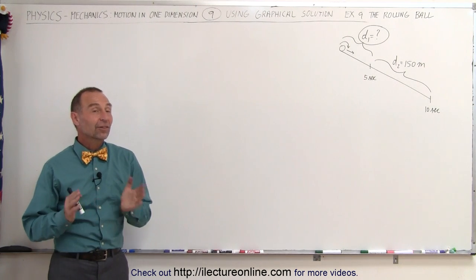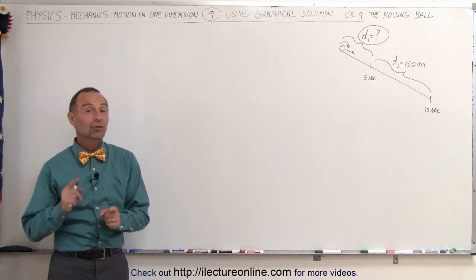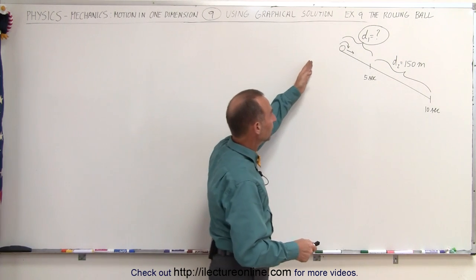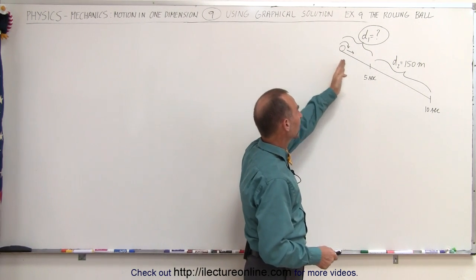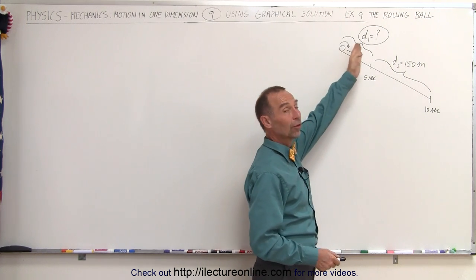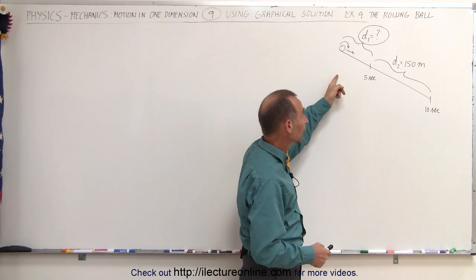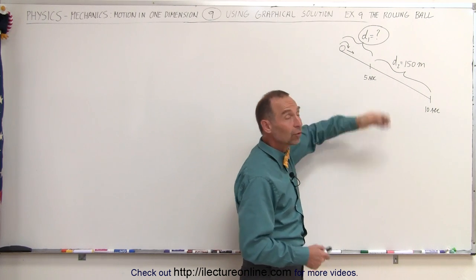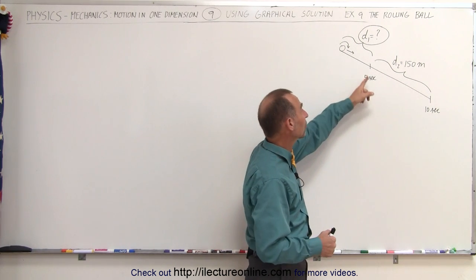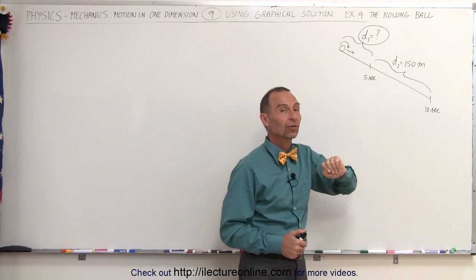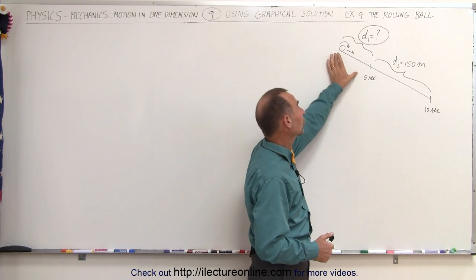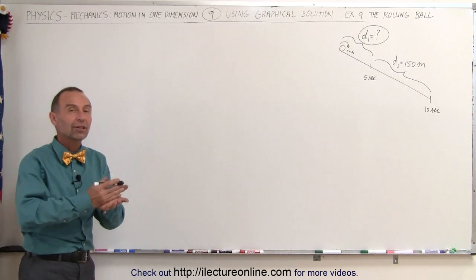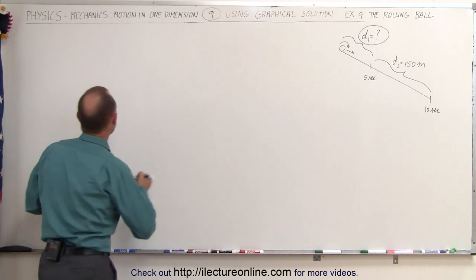Welcome to our lecture online. Here's an example that really lends itself to solving using the graphical method. We have a ball that's rolling down a hill. For the first five seconds it reaches a certain distance — that distance is unknown. We are asked to find that distance, but during the second five seconds of its trip, as it continues to accelerate at a constant acceleration, it will cover a distance of 150 meters. What is the distance covered during the first five seconds? We're going to graph a velocity versus time graph and see what we get.